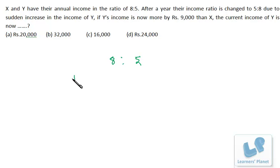the ratio is changed to 5 to 8 due to sudden increase in the income of Y. If Y's income is now more by Rs 9,000 than X, we have to find out the current income of Y, right?